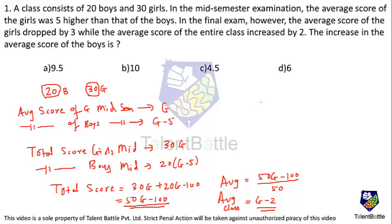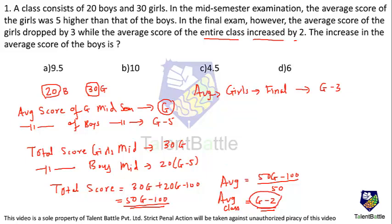In the final exam, the average score of girls drops by 3. Previously the average score of girls was g, so now the average score of girls in the final exam is g minus 3. They have also said the average score of the entire class increased by 2. The mid-sem class average was g minus 2, so in the final exam it increased by 2, making the average of the full class equal to g.